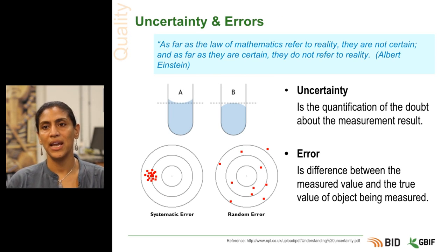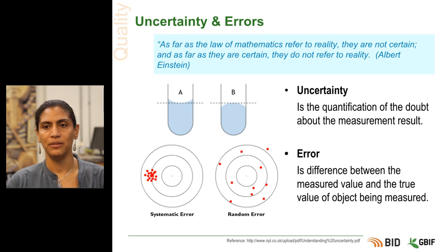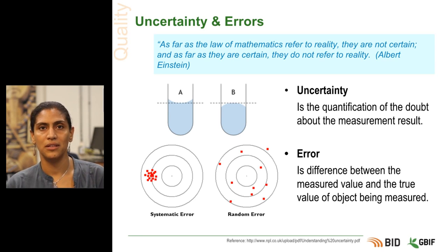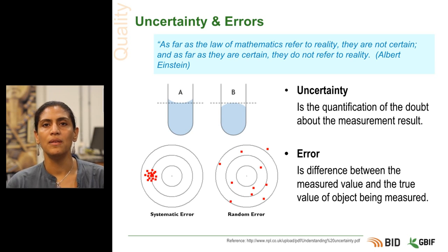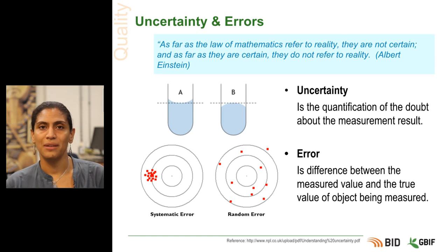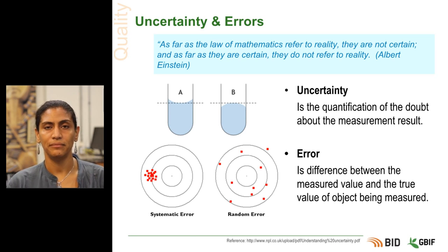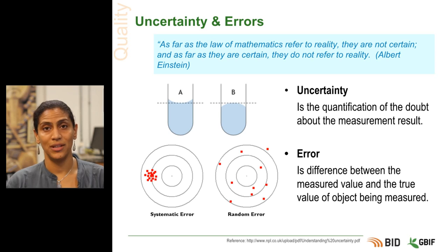Next, we'll look at uncertainty and error. Uncertainty is the quantification of doubt about a measurement. In the top example, we look at two test tubes and see that the measured amount of liquid is the same, however example A is an underestimate whereas example B is an overestimate — you would need to be able to explain this degree of uncertainty to your users. In the bottom example of the targets, we see two types of error: to the left, systematic error, where the points are very close together but incorrect by a similar amount on each attempt; and on the right, random error, where each point is distributed randomly across the target. These are two types of errors you will need to explain and understand in your dataset.